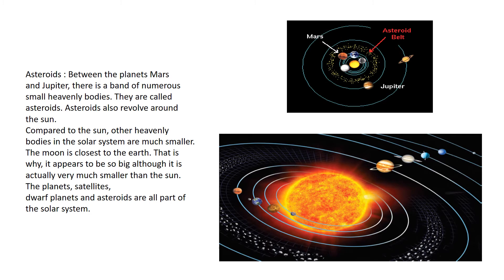Compared to the sun, other heavenly bodies in the solar system are much smaller. The moon is the closest to the earth — that is why it appears so big, although it is actually very much smaller than the sun. The planets, satellites, dwarf planets, and asteroids are all part of the solar system.